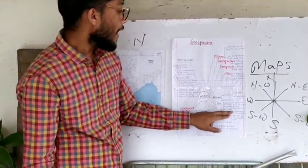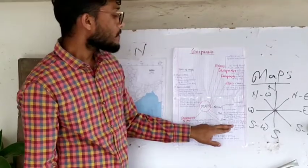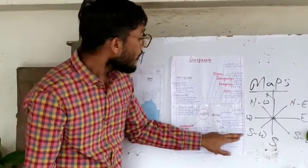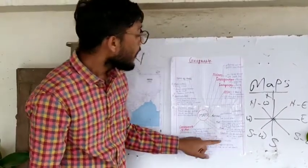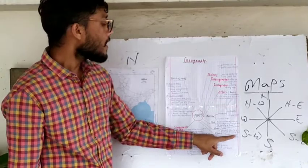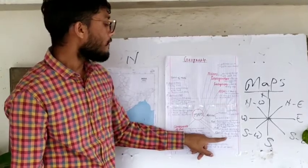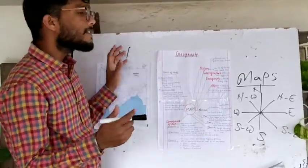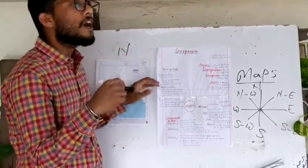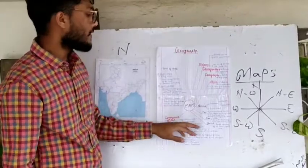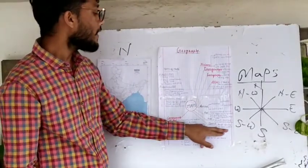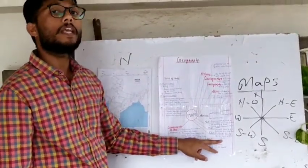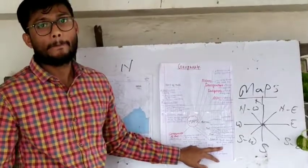A plan is an accurate drawing of a small area on a large scale. A sketch is a rough drawing of an area without using any scale. Thank you.